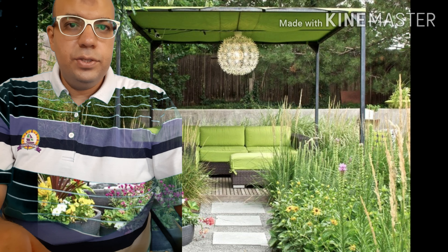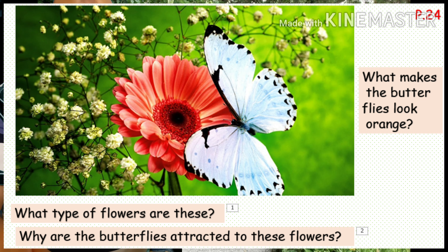Generally, scientists are curious — they ask a lot of questions. What are some questions you can ask about the picture found on page 24? For example: What makes the butterflies look orange? What type of flowers are these? Why are the butterflies attracted to these flowers? This means that scientists are curious and ask questions because they want to better understand the natural world.